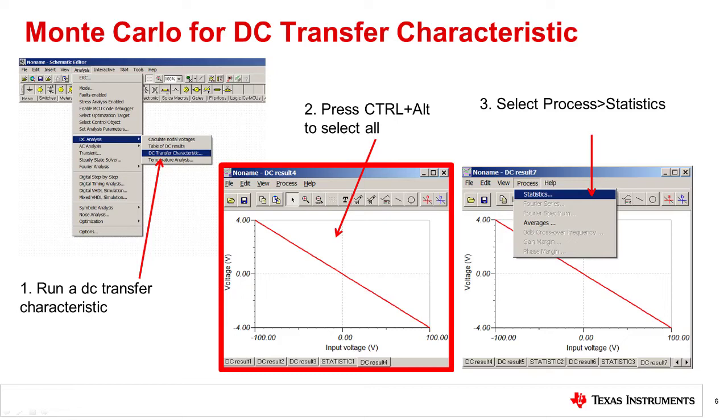Even though the result looks like a single curve, it actually contains 1,000 closely spaced curves. Now we want to use these curves to get a statistically valid gain error.